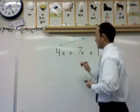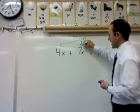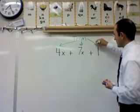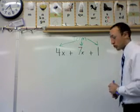My first one is 4x. It's being added to 7x, so the seven is a term. And then the last number to be added is one, so one is also a term.